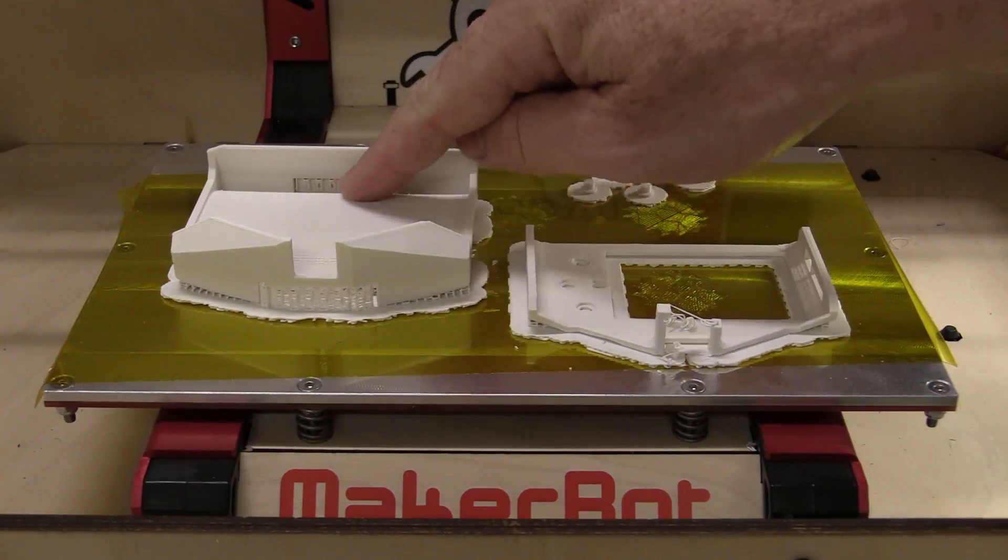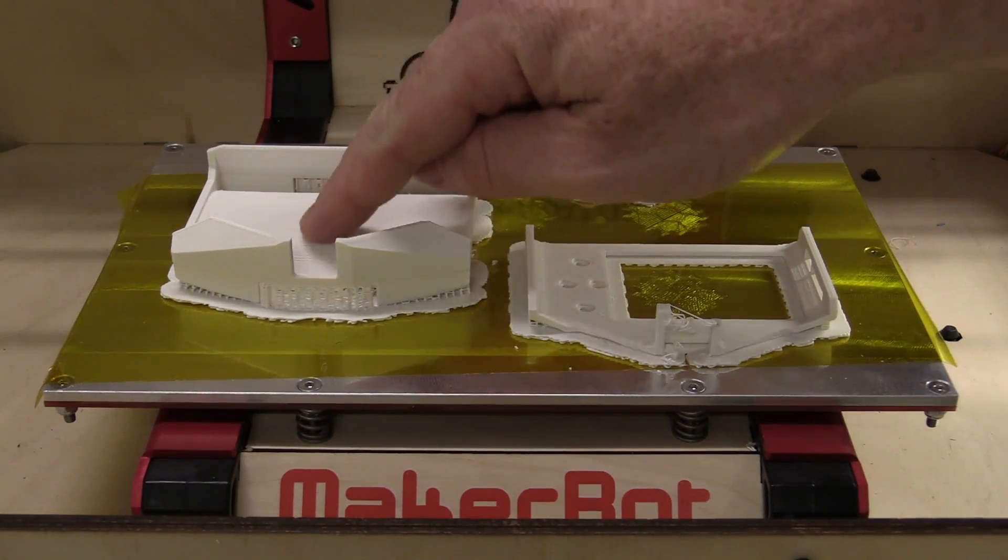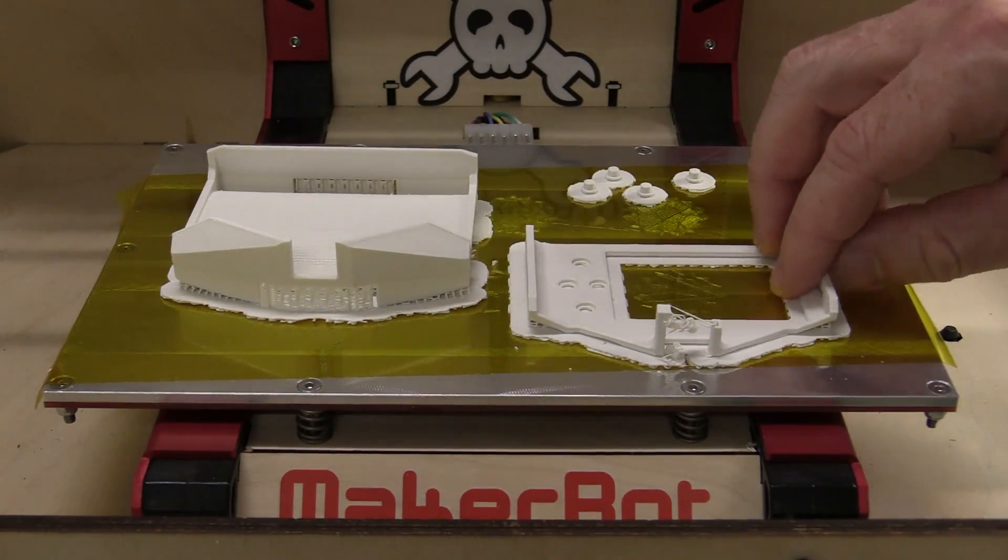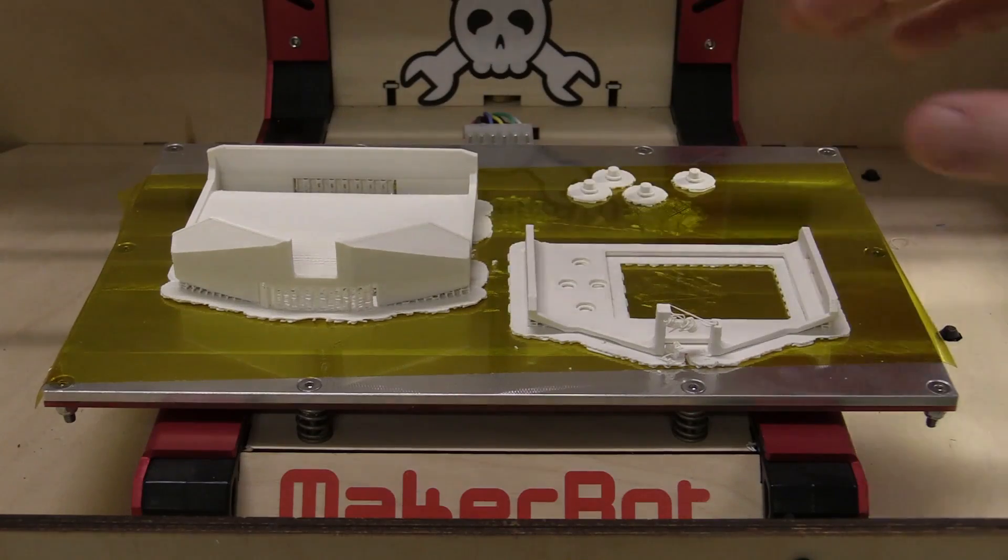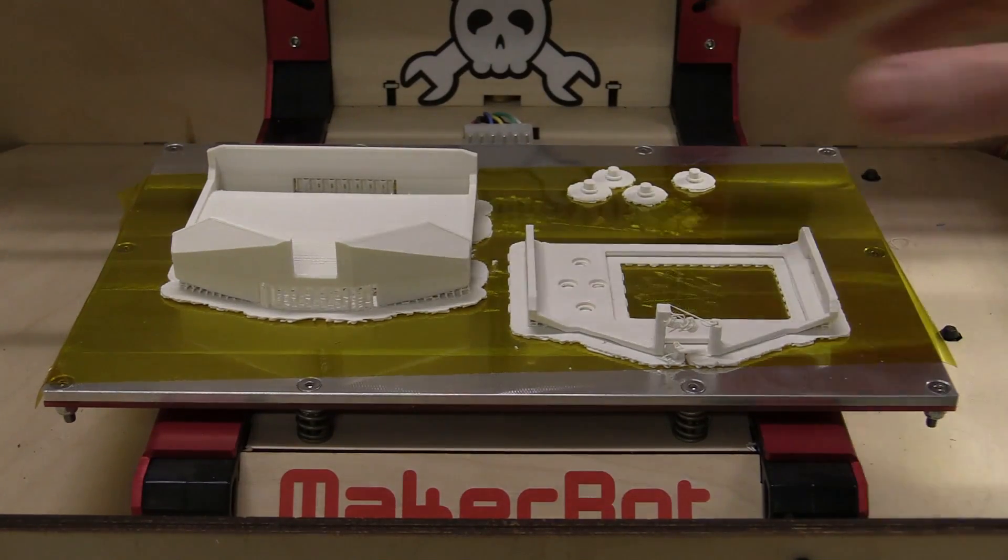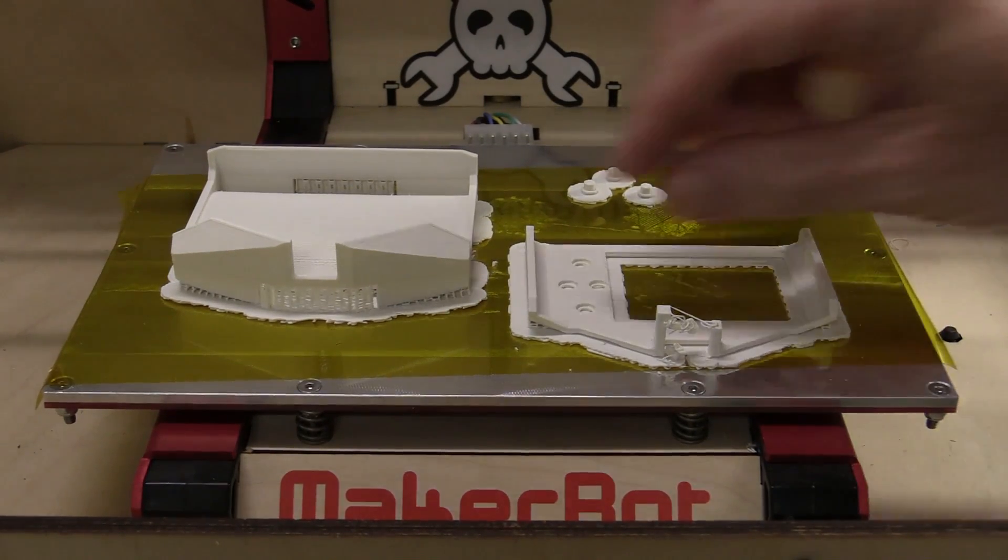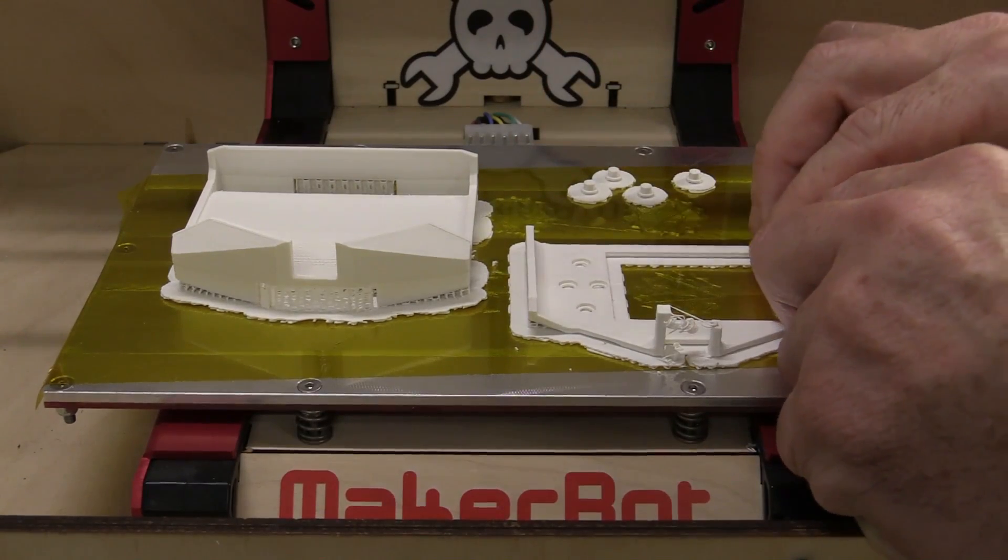But anyway, that was really impressive. I was very impressed how it built the bridge right across there. That was just fantastic. So now we'll peel these suckers off. That was a heated bed by the way. We're using a 110 degree bed with a 230 degree head on that, and it's all done with ABS plastic.